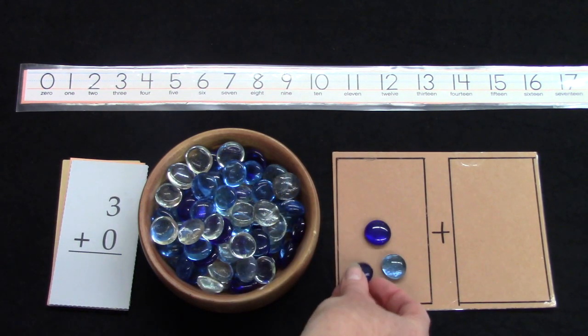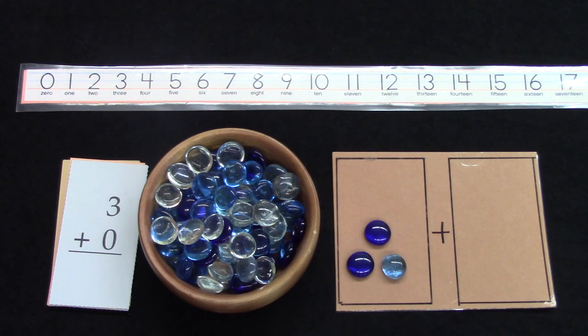If we have three plus zero, what would our answer be? You're right. It's three plus zero.